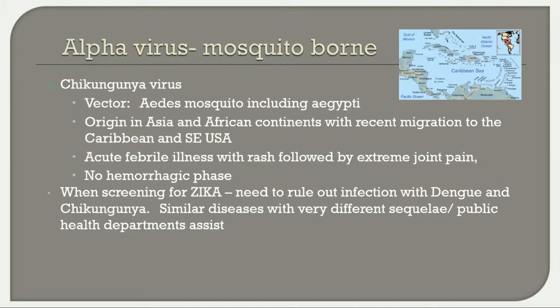Chikungunya is an alphavirus transmitted by the Aedes mosquito, originating in Asia and Africa with recent migration to the Caribbean and southeastern US. It presents as an acute febrile illness with rash followed by extreme joint pain. Unlike dengue, there is no hemorrhagic phase. When screening for Zika, infection with dengue and chikungunya must also be ruled out, as they can present with similar diseases but very different sequelae.